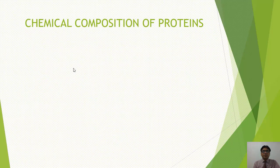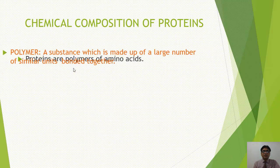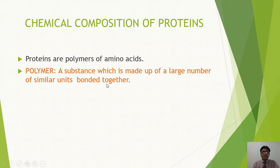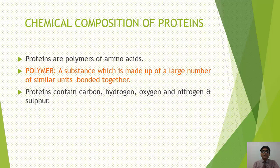Now we will study chemical composition of proteins. Proteins are polymers of amino acids. Polymer को हम define करेंगे: a substance which is made up of a large number of similar units bonded together. तो proteins को भी हम polymers कहते हैं क्योंकि proteins भी large number में similar units यानि amino acids से मिलकर बनी होती हैं, और ये amino acids peptide bond के ज़रिए एक दूसरे के साथ attached होते हैं। Proteins में 4 elements present होते हैं: carbon, hydrogen, oxygen और nitrogen। लेकिन कुछ proteins ऐसी भी हैं जिनमें sulfur भी present होती है।